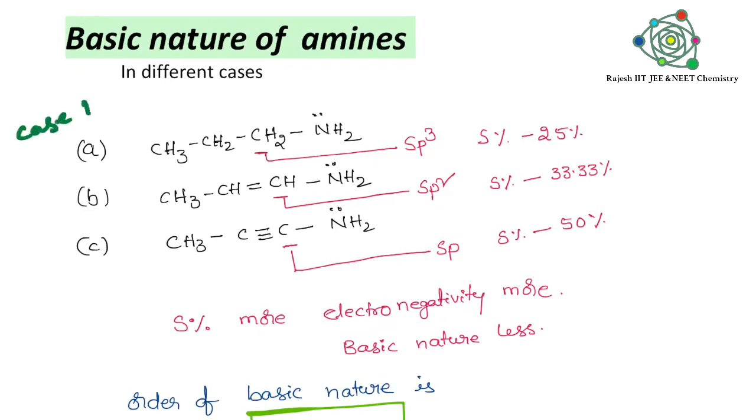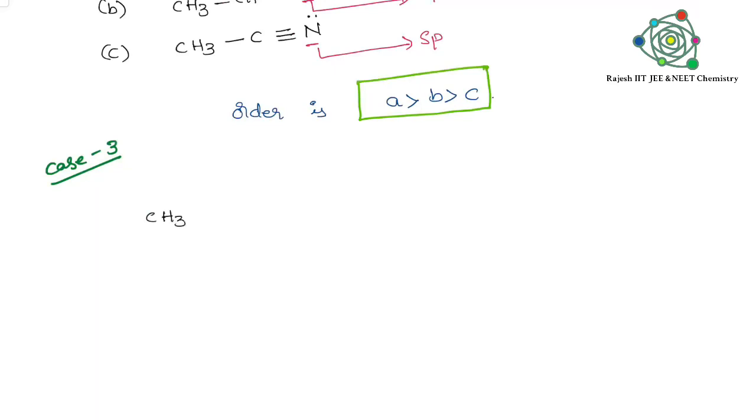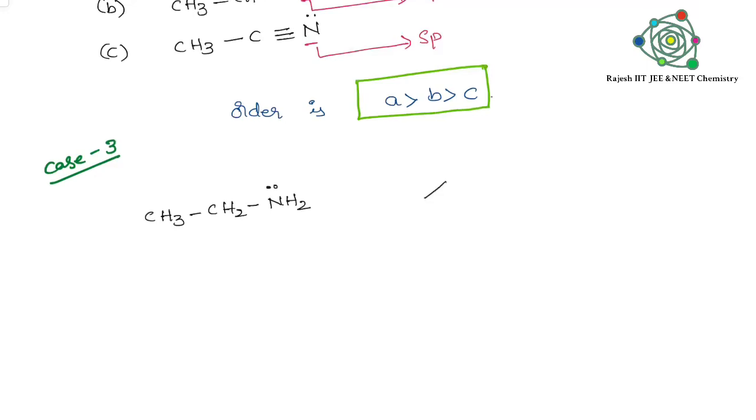Take this as case one, this one as case two, and case three. Case three is very simple. Here we are taking primary amine and aniline.